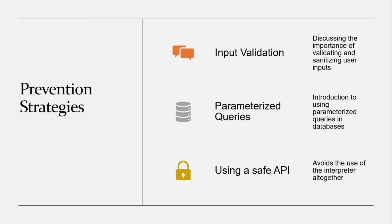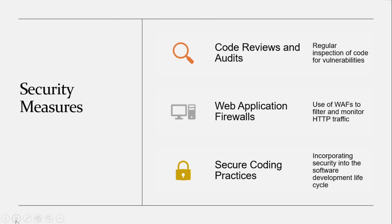Use safe APIs provided by the programming language or frameworks you are using. Conduct regular code reviews and use static analysis tools to identify and remediate injection vulnerabilities in the application code. Manual code reviews and automated static analysis can help uncover potential security weaknesses including injection vulnerabilities before they are deployed into production. Implement a web application firewall to inspect incoming HTTP traffic and filter out potentially malicious requests. The WAF can detect and block various types of injection attacks including SQL injection, command injection, and XSS.